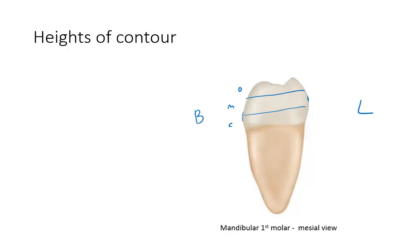In terms of function, there has been debate about what the height of contour actually does. Originally it was thought that the bulge creates a space for food to move through, similar to an embrasure, aiding self-cleansing. But research found that shaving away the height of contour doesn't significantly affect self-cleansing. The actual functionality has some debate, but what you need to know is it's the greatest bulge, and you need to be able to describe where it is on every tooth.